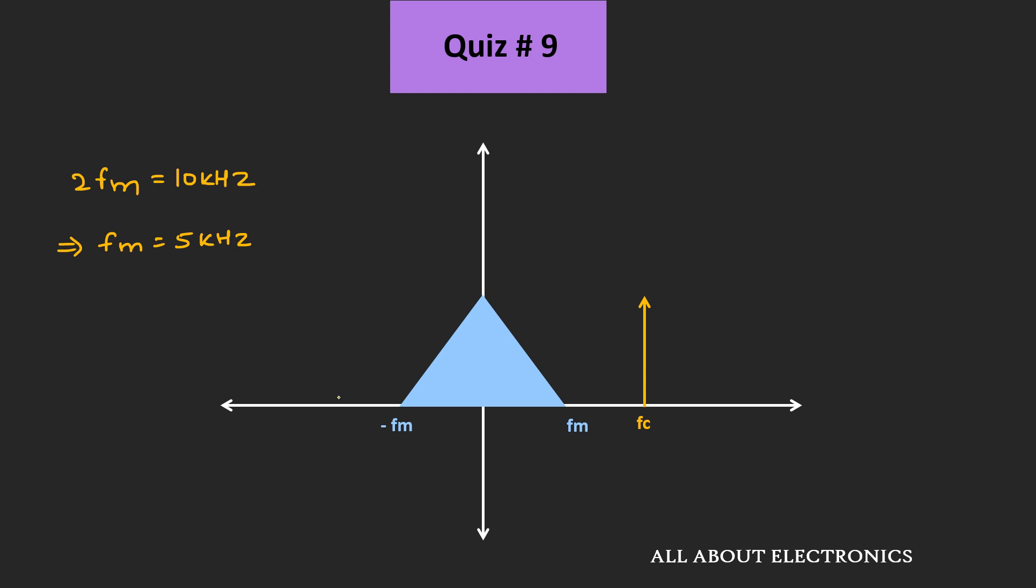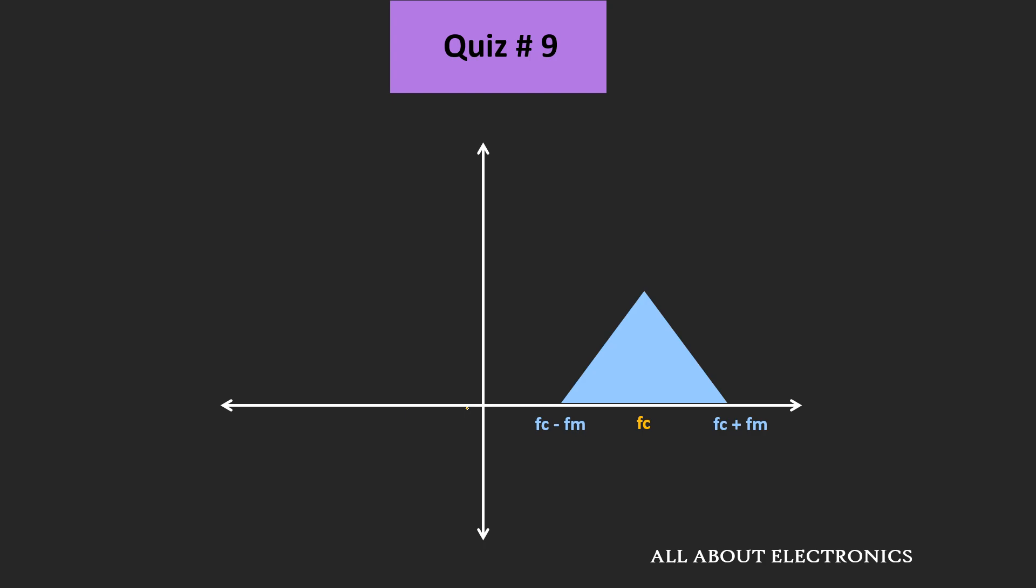When the signal is amplitude modulated at the carrier frequency, the entire spectrum gets shifted by the carrier frequency. In this modulated signal, the maximum frequency fmax equals fc plus fm, and the minimum frequency fmin equals fc minus fm.